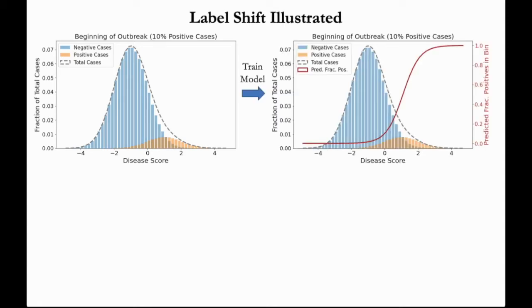As we expect, patients who test positive for the disease, shown in orange, tend to have a higher disease score compared to patients without the disease. Because this is the early stage of the outbreak, the fraction of positive cases is only around 10% of the total patients. If we predict the probability that someone has the disease based on their symptoms, the ideal predictions would look something like this.